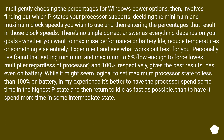Intelligently choosing the percentages for Windows power options involves finding out which P states your processor supports, deciding the minimum and maximum clock speeds you wish to use, and then entering the percentages that result in those clock speeds. There's no single correct answer, as everything depends on your goals — whether you want to maximize performance or battery life, reduce temperatures, or something else entirely. Experiment and see what works out best for you.